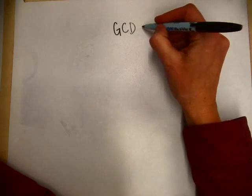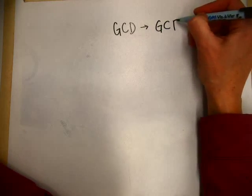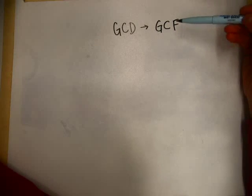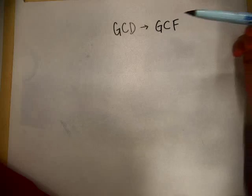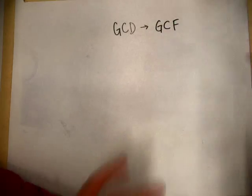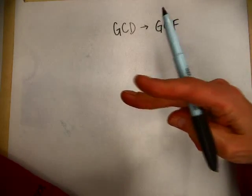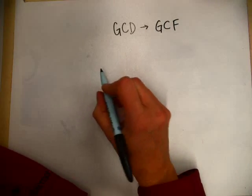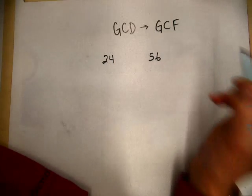I prefer to call it greatest common factor, but it's the same thing. A factor and a divisor are both numbers that divide into another number. We want to find the biggest one that divides evenly into two different numbers. So let's try 24 and 56.